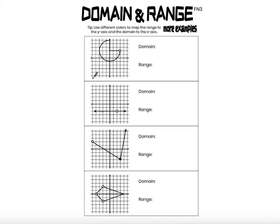Let's look at the domain of this first graph. The value of negative 5 is not in the domain, negative 4 not in the domain, but negative 3 is in the domain because this point on the graph has an x-coordinate of negative 3. Moving to the right as x gets bigger, all of these values of x are in the domain because there is at least one point — in this case two points — on the graph with that x-coordinate.